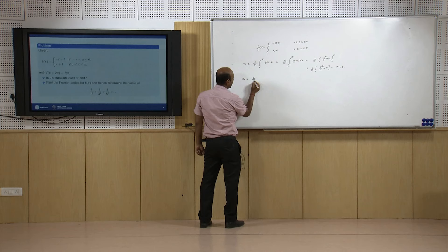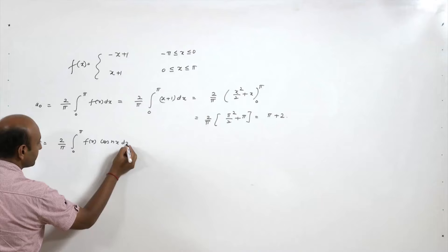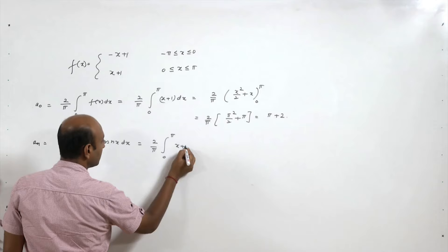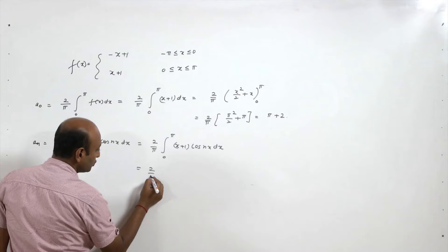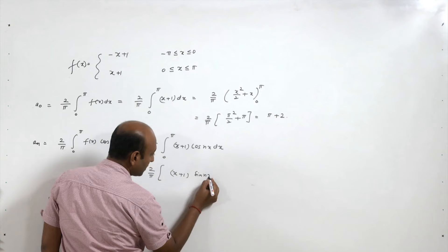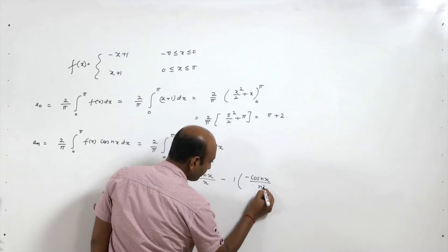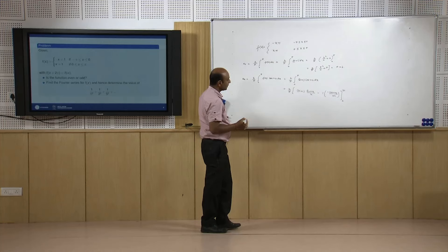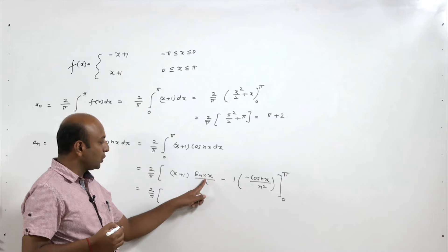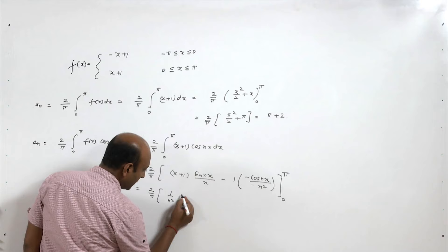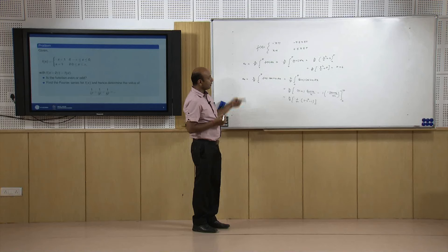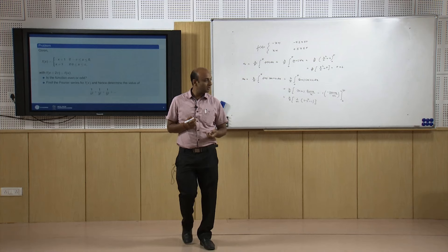For aₙ: aₙ = (2/π) ∫₀^π f(x) cos(nx) dx = (2/π) ∫₀^π (x+1) cos(nx) dx. Applying integration by parts: = (2/π) [(x+1)(sin(nx)/n) + cos(nx)/n²] from 0 to π = (2/π) · (1/n²)((-1)ⁿ - 1). Since bₙ = 0 for an even function.